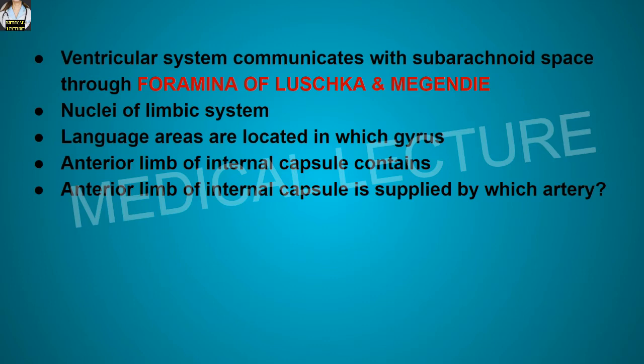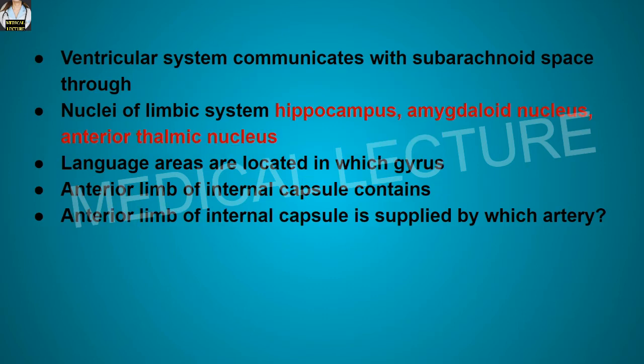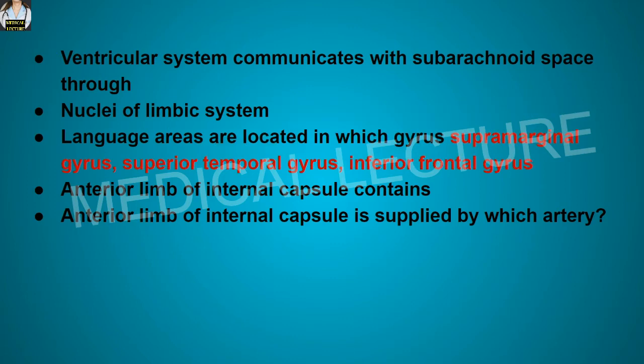The nuclei of the limbic system are the hippocampus, amygdaloid nucleus, and the anterior thalamic nucleus. Language areas are located in the supramarginal gyrus, superior temporal gyrus, and the inferior frontal gyrus.